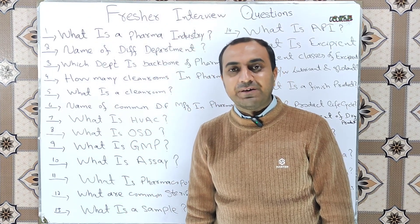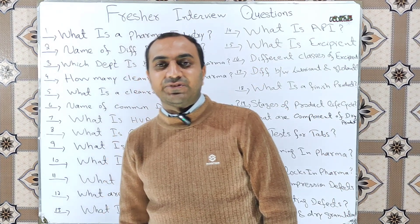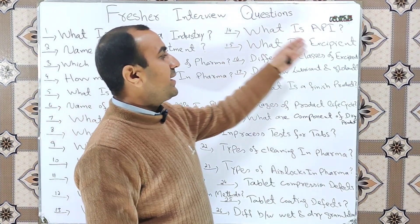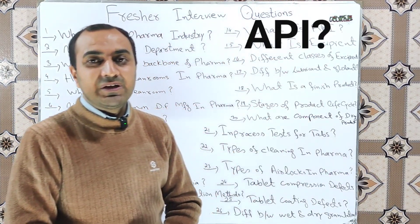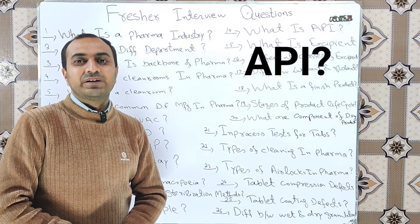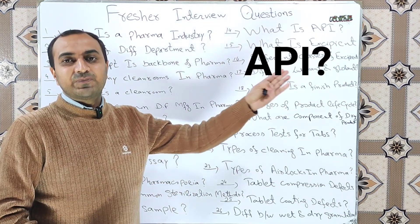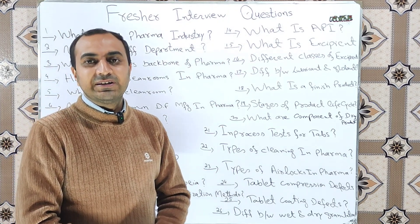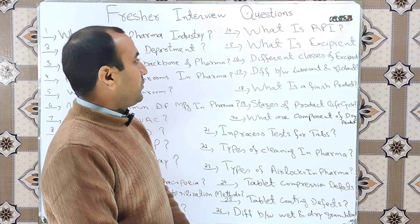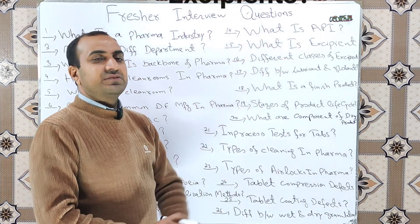What is the API? API stands for Active Pharmaceutical Ingredient. It is the substance which gives the pharmacological effect in the drug product.